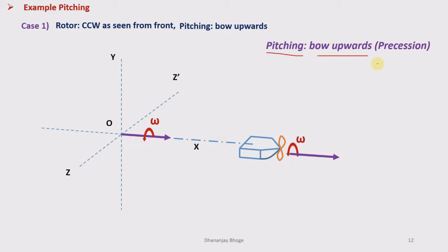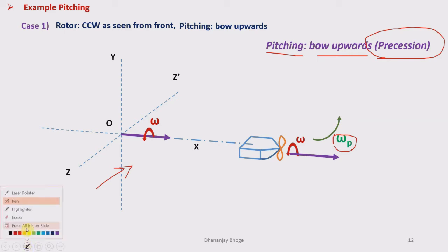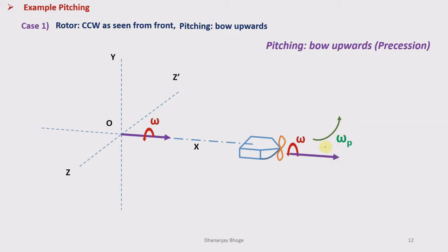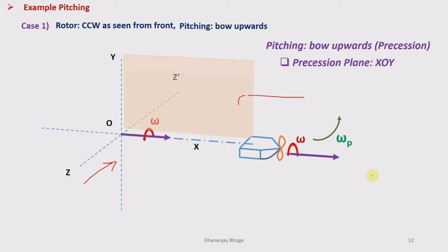We place the spin vector at the origin of the coordinate system. The ship is pitching with the bow rising upwards — this motion is called precession, and it takes place in the vertical plane as seen from the front side or as seen along the z-axis. We indicate the speed with which the bow of the ship rises upwards by Omega_p, called the precession velocity. The plane of precession is XOY — the vertical plane as seen along the z-axis — so we represent Omega_p with a circular arrow in this precession plane.